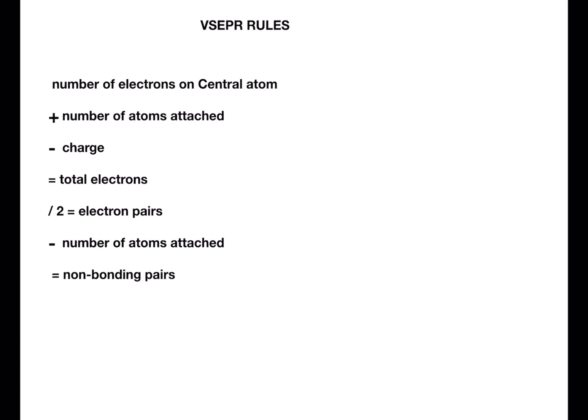Electron pairs will have one particular shape. You then need to find out how many non-bonding pairs you have. To do this, take the number of electron pairs and minus how many atoms are attached to the central atom, and this will tell you the number of non-bonding pairs. This will then allow you to work out the shape of the molecule itself.